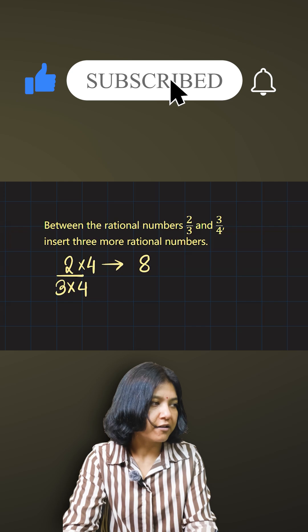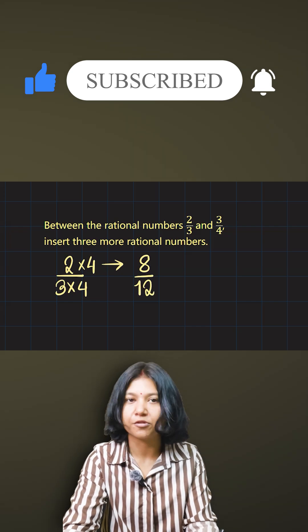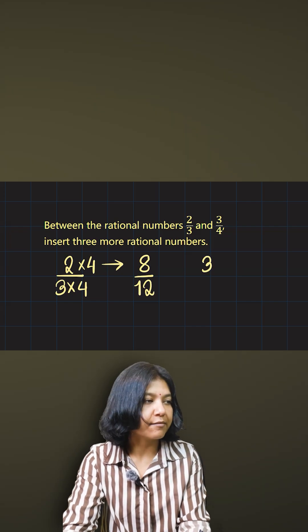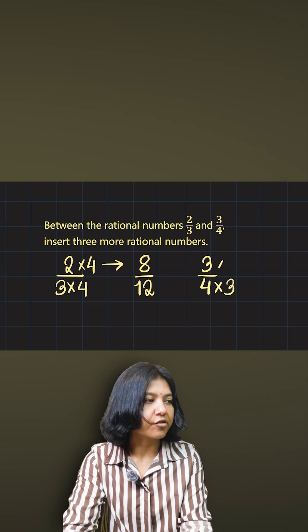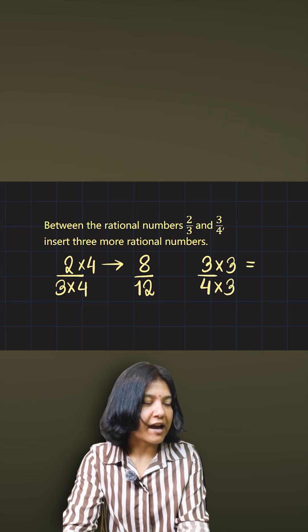I'll have to multiply the same number at the top, giving me 8/12, which is the other way I represent 2/3. Similarly, I'll do the same thing for 3/4. Four times three is twelve, so three times three.